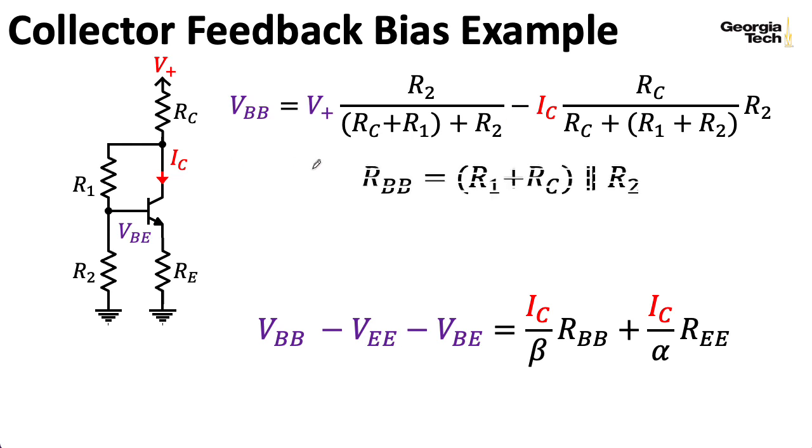If the arrow is pointing towards the node, then you put a plus here. If the arrow is pointing away from the node, it's pulling current out of the node, then you put a minus here. And you don't have to think about it any further than that. So it's a bit easier to think about computing the Thevenin resistance looking out of the base, because then we just have a parallel combination of RC plus R1, these two resistors in series, with R2. So that's not nearly as difficult to think about. And the Thevenin equivalent looking out of the emitter is easy enough to think about. VEE is just zero, and REE is just this emitter resistor, RE.